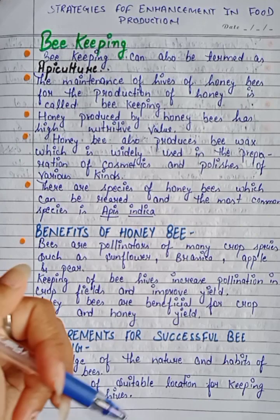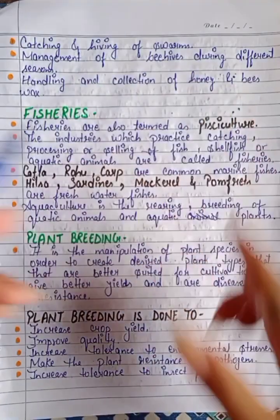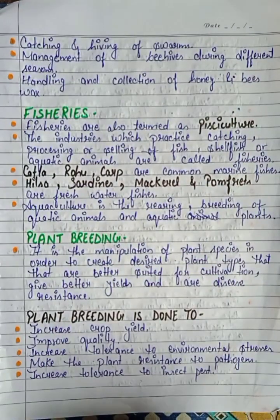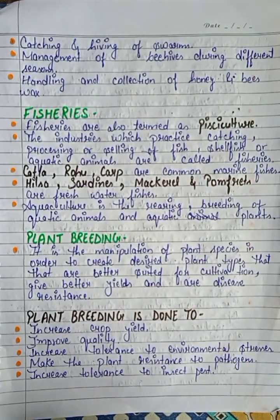Second requirement is selection of a suitable location for keeping the bee hive — we need a suitable location to place the hive. Third is catching and hiving of swarms. We need to know how to find and hive the swarm.